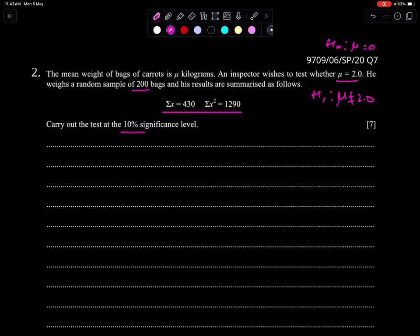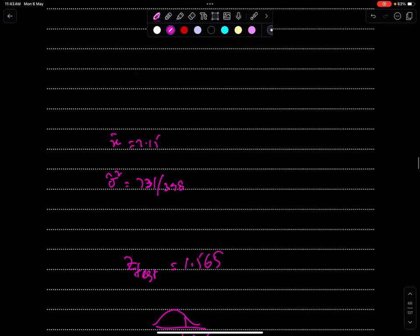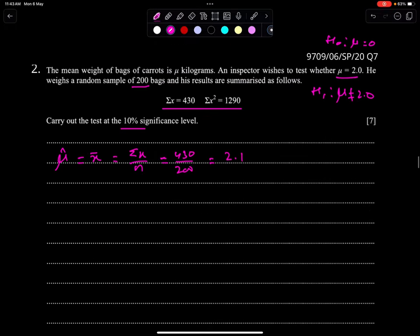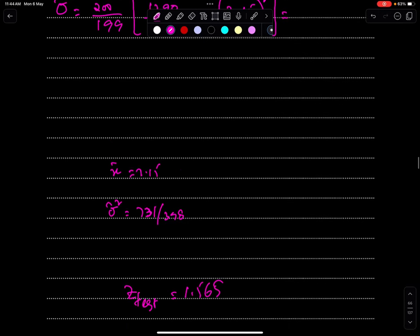He got these results, so we need to find mu cap and sigma cap square. At 10 percent significance, number one we need to find mu cap sample mean: sigma x over n, 430 over 200, so 43 upon 2 which is 2.15. Sigma cap square: 200 upon 199, 1290 upon 200, 2.15 whole square, and the answer of this is 731 over 398.